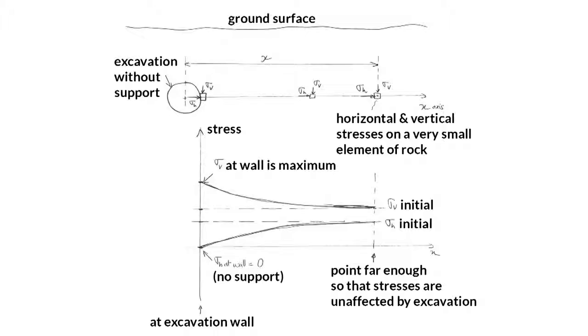Engineers also have to predict how modifying a rock mass, for example by building on it or excavating it, affects the stress distribution in the ground. For example, creating an opening, especially without internal support, does affect significantly the stress distribution in the ground. We will see this in this figure.